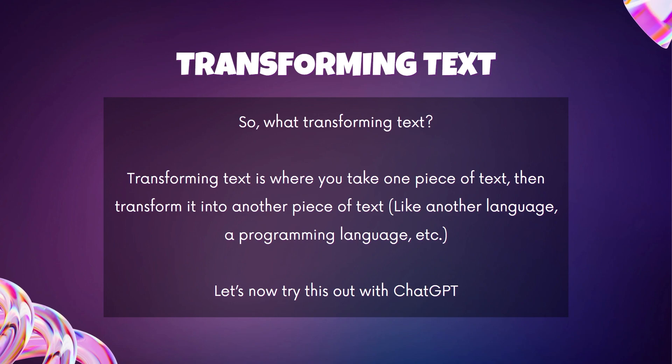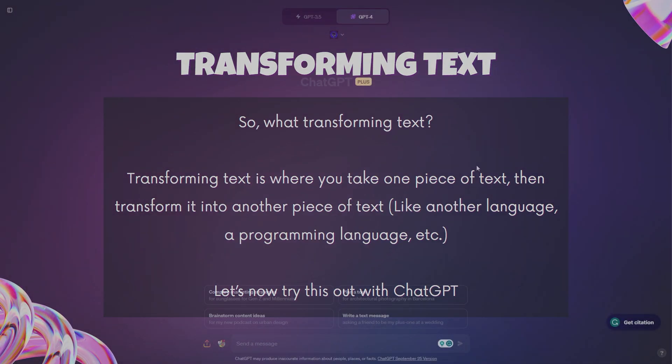For example, you can take a piece of text that's in a certain language and then convert that to a different language, or you could also have a piece of text and change that into a programming language, into a website, and so on. Let's actually try this out with ChatGPT and see what examples we can make with this transforming text.